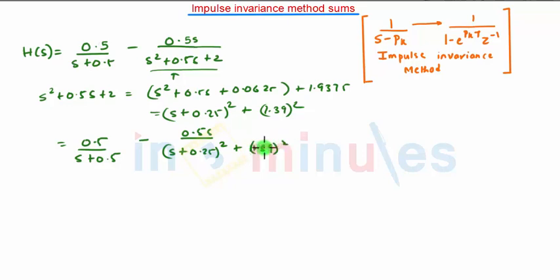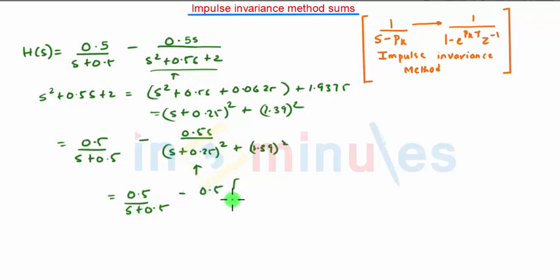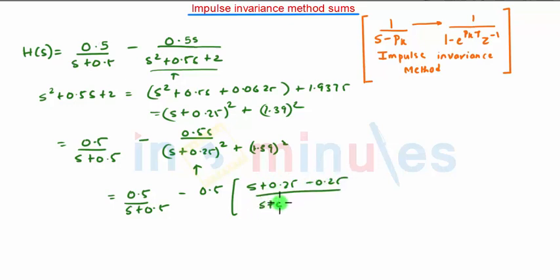Now we can make modifications to express the terms in the standard transformation formulas. We take 0.5 common and add and subtract 0.25, giving us 0.5 × (s + 0.25 − 0.25) / ((s + 0.25)² + (1.39)²), which helps bring the expression into standard form.